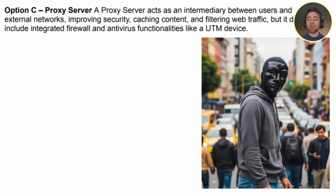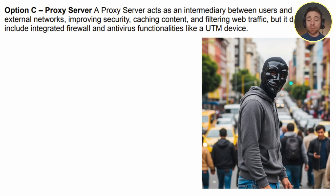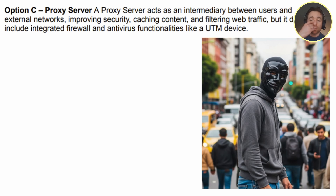The next option was a proxy server. A proxy server acts as an intermediary between users and external networks. Your user will send data not to their final destination but first to a proxy server, and that proxy server will then send that data on their behalf. So the person receiving that data sees the IP address of the proxy server, not the IP address of the person who originally sent it — it masks their true identity. There are other purposes of a proxy server, but we're not going into full detail here.